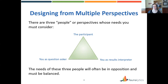Oftentimes the needs of these three different people will be in opposition, so you have to find a way of balancing them. You as the question asker want to ask everything under the sun. The participant wants to answer as little as possible because they have time constraints. And you as the results interpreter need to do both — get a lot of information, but also have it in an understandable, easy-to-interpret way.